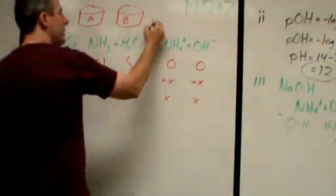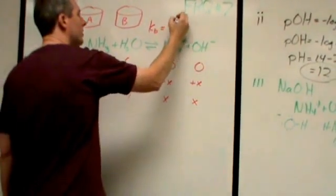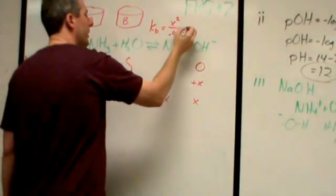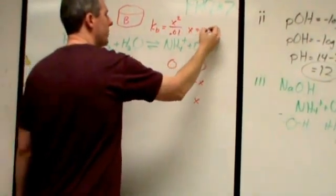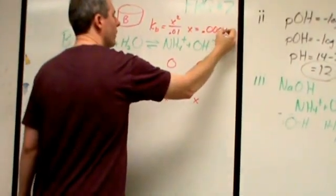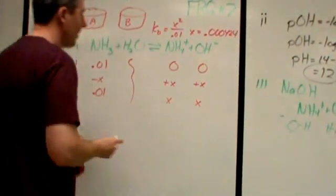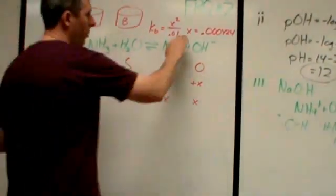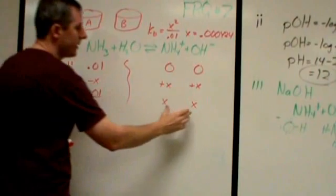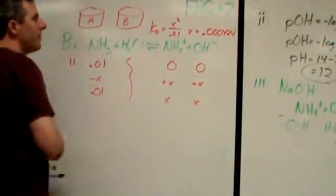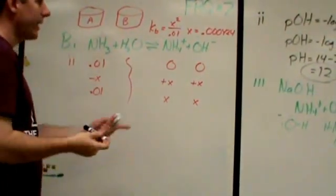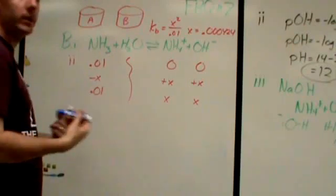And so, my KB expression here is set equal to X squared over 0.01. And I can solve for X. And it ends up being 0.000424. Now, what is that? What is this X? Well, this is the hydroxide ion concentration, the ammonium concentration. And the hydroxide in particular is really relevant to me finding the pH.